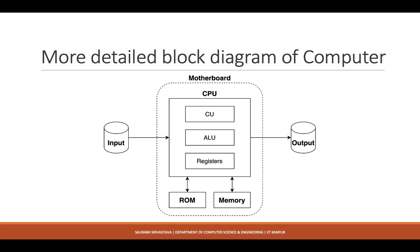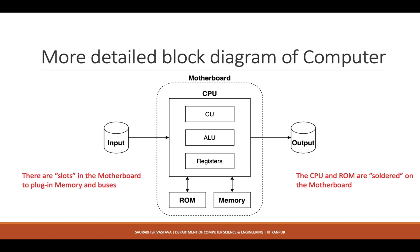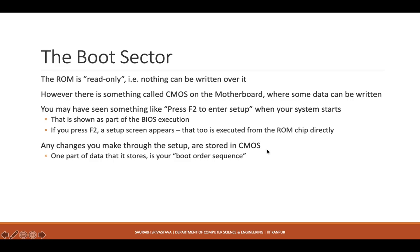Here is a more detailed block diagram of the computer. We have already seen the CPU, input and output devices, and memory which is basically RAM. Now there is another component: ROM. The CPU and ROM are soldered onto the motherboard and come along with it. The motherboard also has slots — places where you can put things like main memory and buses.